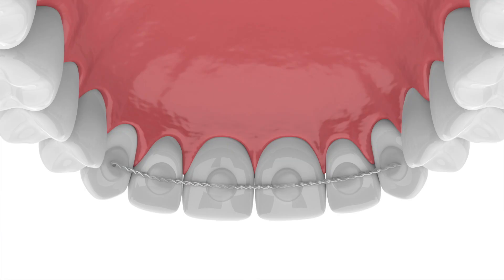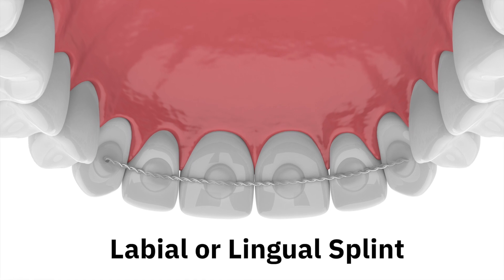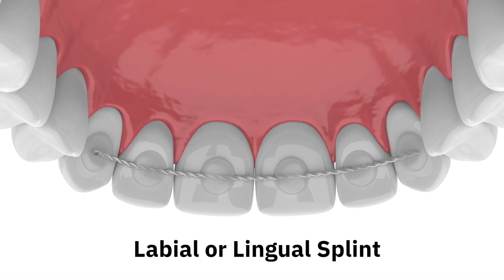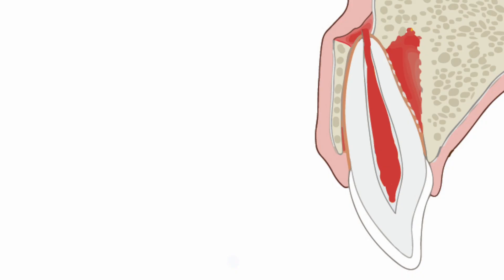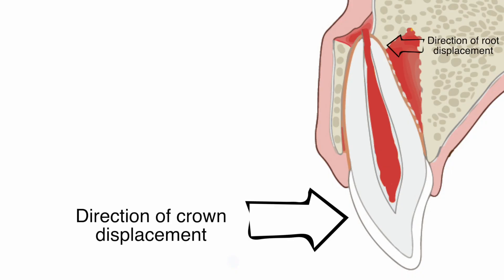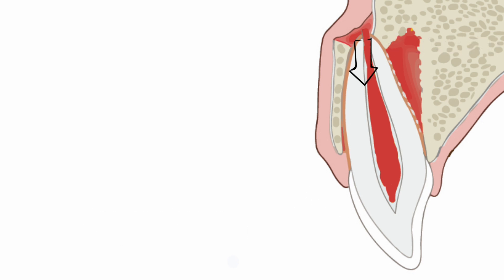The goal of treatment is to reposition the tooth and splint. For full treatment directions refer to the trauma guide. Repositioning a lateral luxation can be tricky — because the tooth has locked itself into the alveolar bone, you need to push the tooth down and back to its original position simultaneously. Once you think it's correctly repositioned, confirm the position with a radiograph.